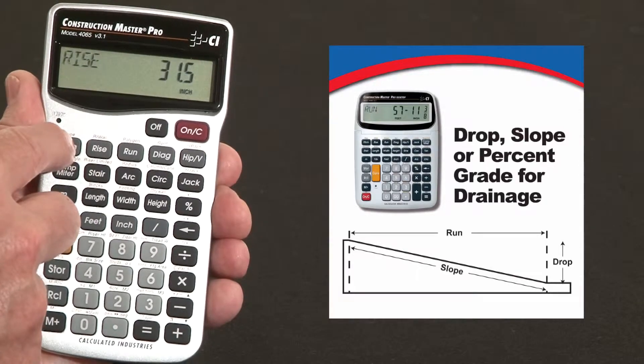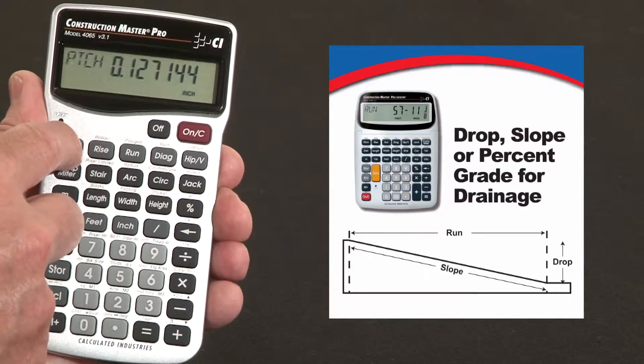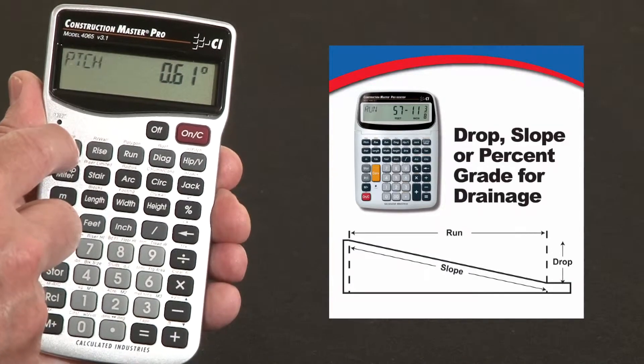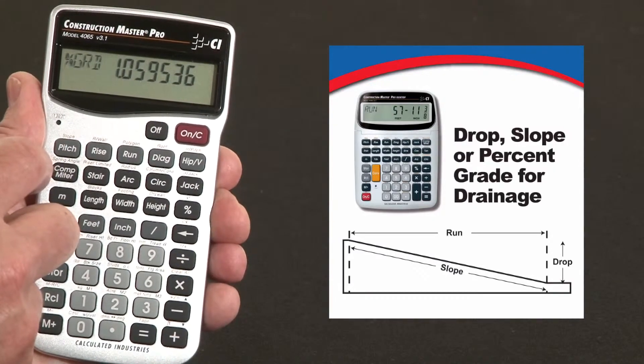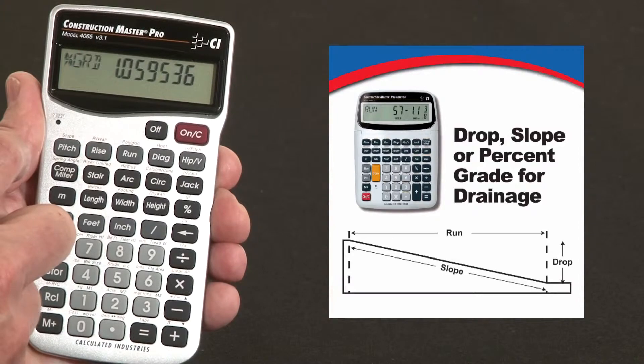Now we just calculate the pitch or the percent grade. So there's the pitch but now the degrees is 0.61 degrees and it's a 1.06 percent grade.